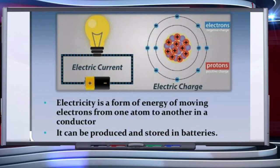So, let us understand what is electricity. Electricity is a form of energy of moving electrons from one atom to another in a conductor. It can be produced and stored in batteries.